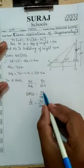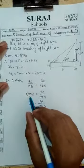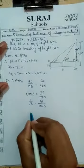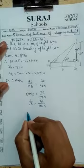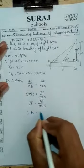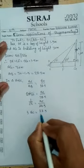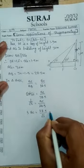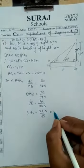Cot 60° = BC upon 28.5. The value of cot 60° is 1 upon root 3. Solving by cross multiplication, BC = 28.5 upon root 3 meter. This is the value of BC.